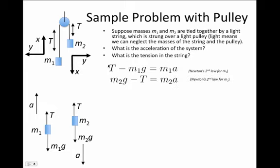For m2, gravity points in the positive x direction, because m2g points down, and the x direction points down. And T, the tension of the string, points in the upward direction, which is negative x. This expression is Newton's second law for the second mass. It says the sum of the forces equals m2 times a.